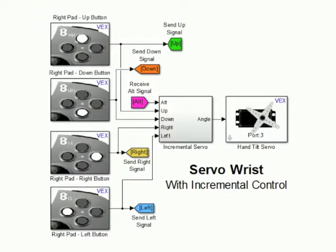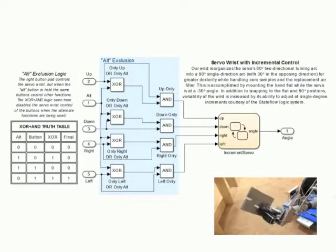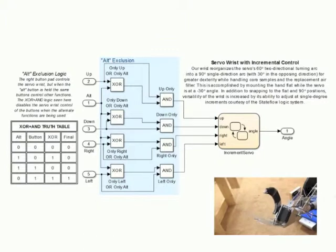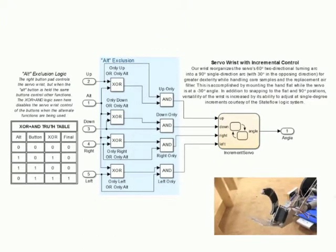The wrist is arguably the most advanced programming component of Reaper. Its first major feature is the logic system known as alt-exclusion. The alt button is used like the alt key on a computer keyboard, allowing us to reuse the same buttons on the controller for multiple separate functions.